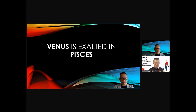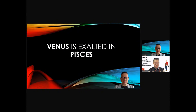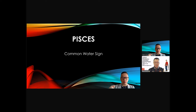So Venus is exalted in the sign of Pisces. It means that Venus' power becomes maximum when Venus is in Pisces. Now, what is Pisces sign? It is a common water sign.